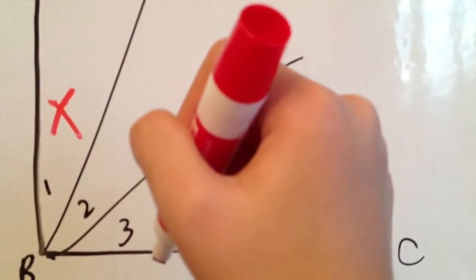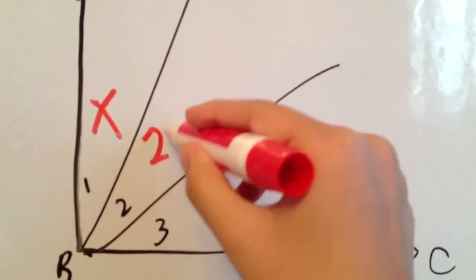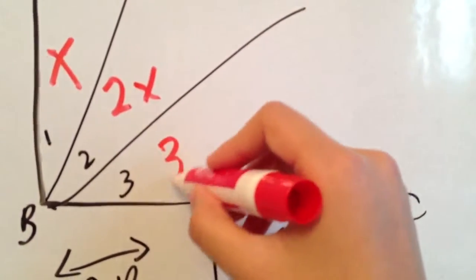Now, it says 1 to 2 to 3, so we can say angle number 2 is 2X, and then angle number 3 is 3X.